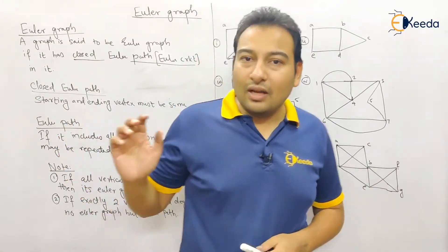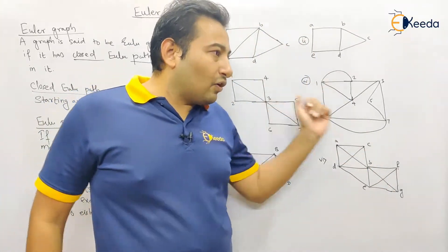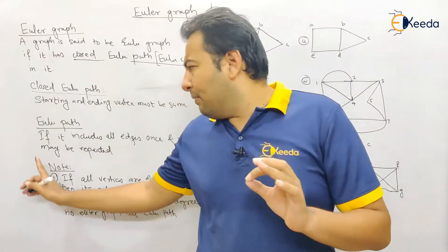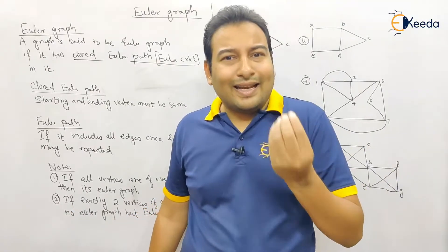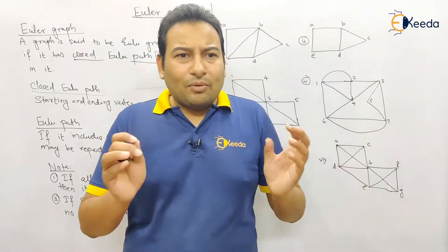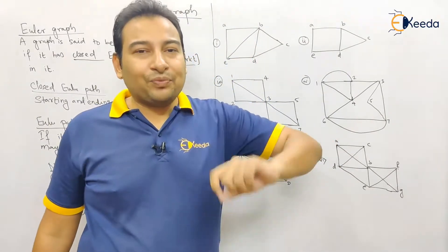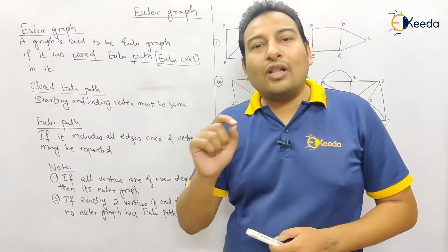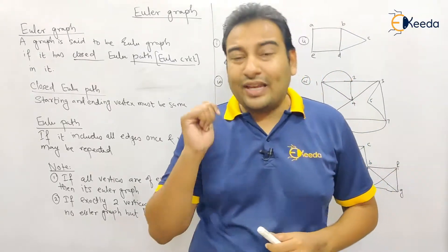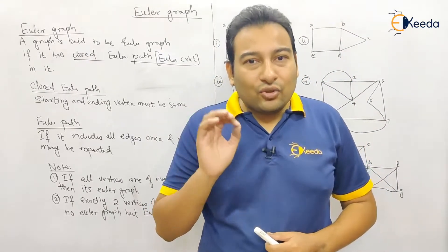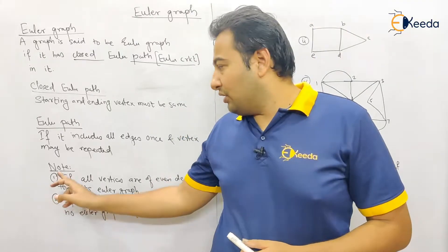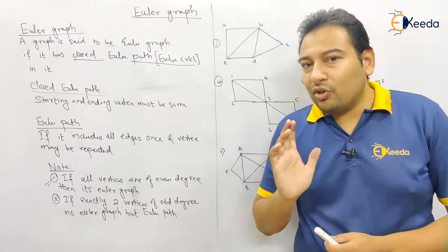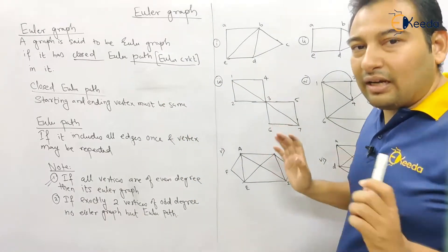Now there are a few graphs given and we need to check whether they are Euler graphs or not. A very important point — especially for GATE exams and MCQ competitive exams — by looking at the graph you can determine whether it is an Euler graph. The condition is: in an Euler graph, all vertices must have even degree. If all vertices have even degree, the graph is an Euler graph.